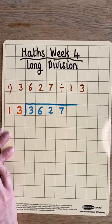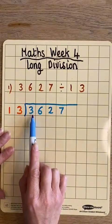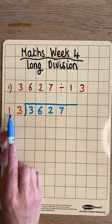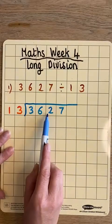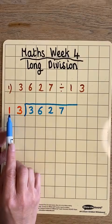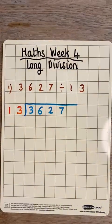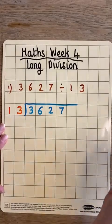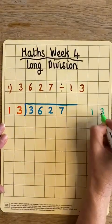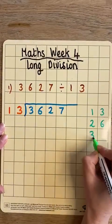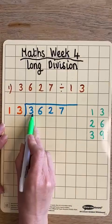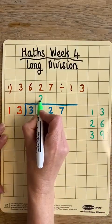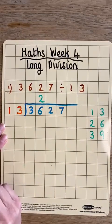Now that the sum is set up — 3627 divided by 13 — we use a step-by-step approach, starting with 36 divided by 13. How many 13s will go into 36? I know that 1 thirteen is 13, 2 thirteens is 26, and 3 thirteens would be 39. I can't fit 3 thirteens into 36, so I can only fit 2 thirteens, and the number 2 goes in the answer space on top of the bus stop.